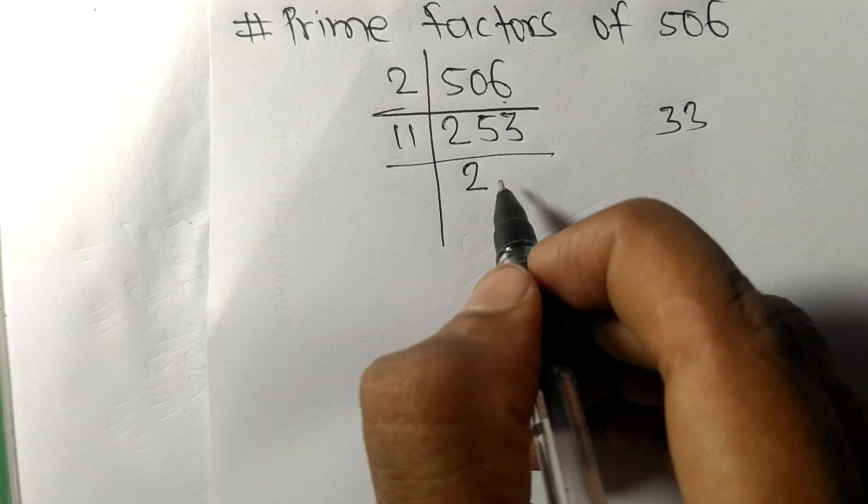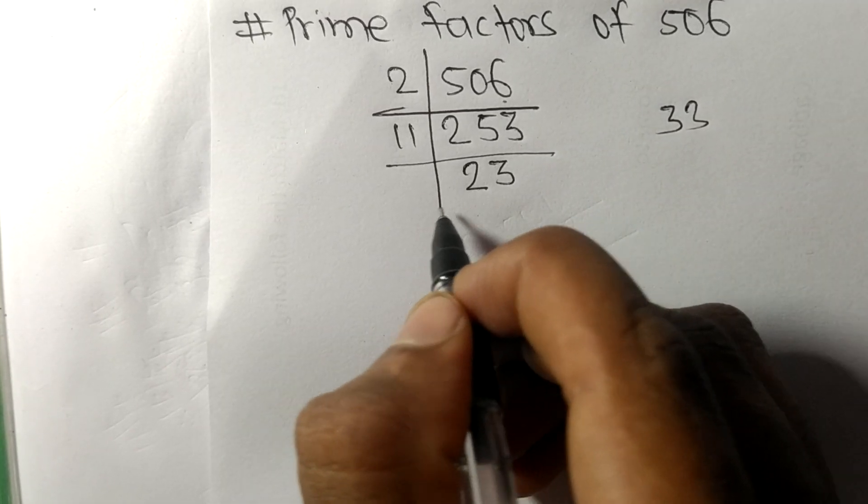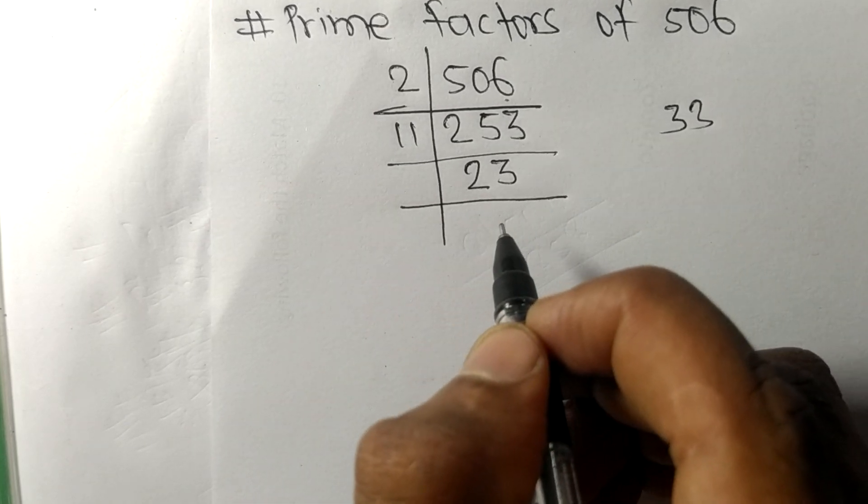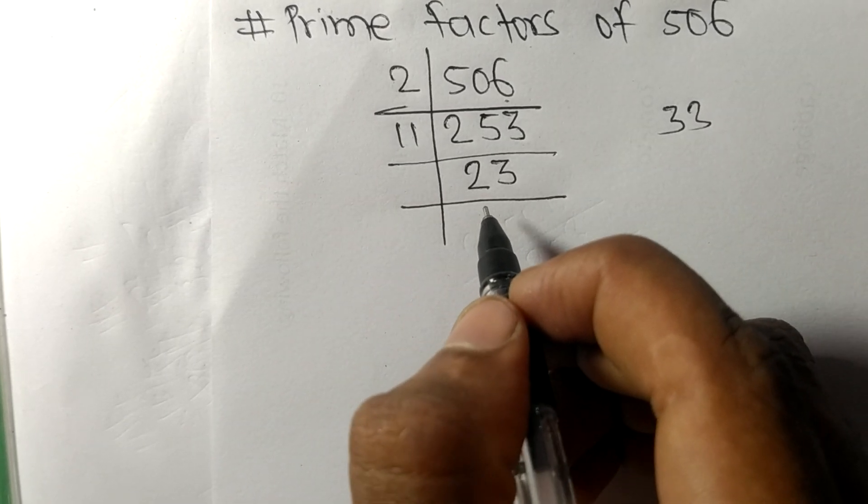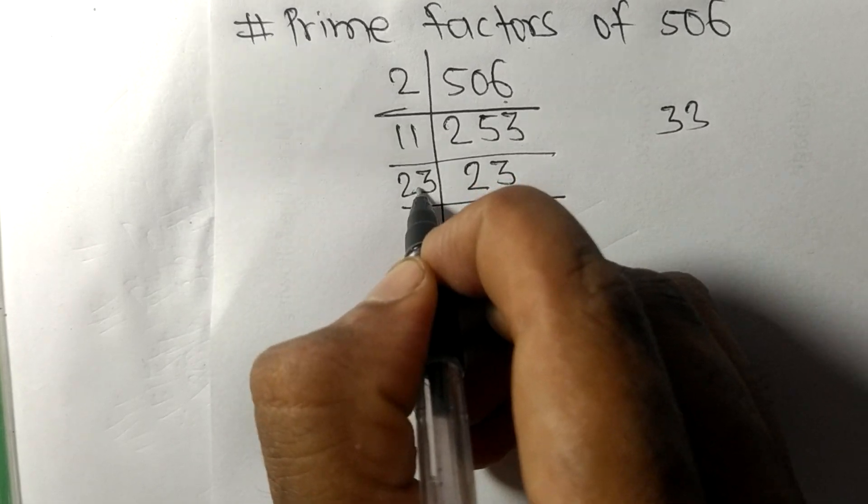So now we got here 23, which is a prime number, so it is divisible by 23 itself, and we get here 1.